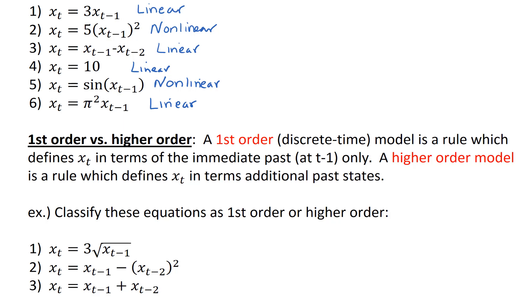So, let's classify these equations as first order or higher order. In the first example, x sub t equals 3 times the square root of x sub t minus 1. This is certainly a first order equation because I'm only taking into account the immediate past. And you might also be thinking that this is a nonlinear model.